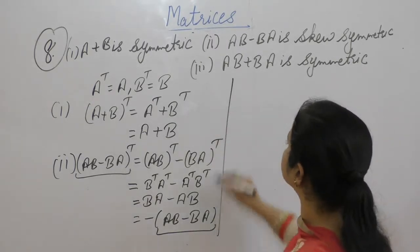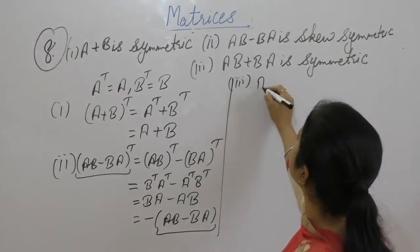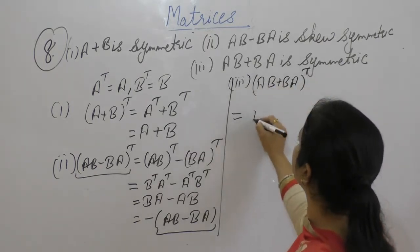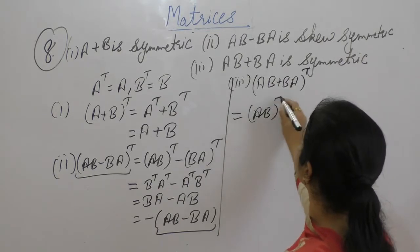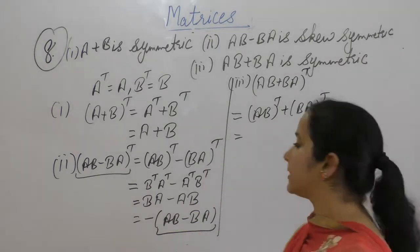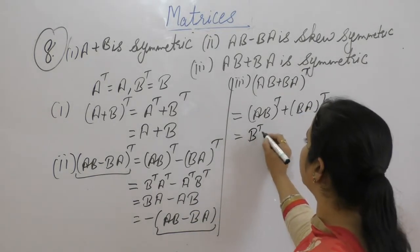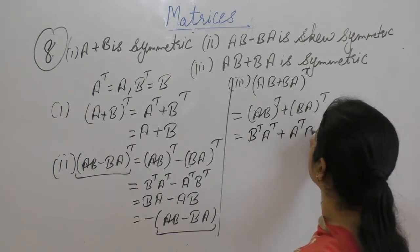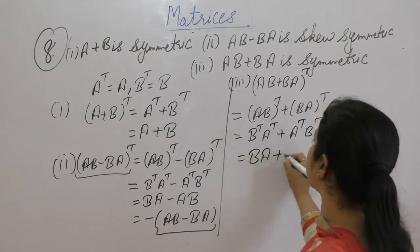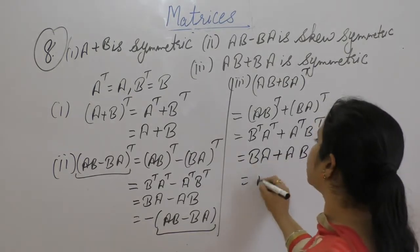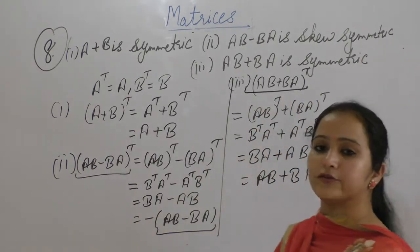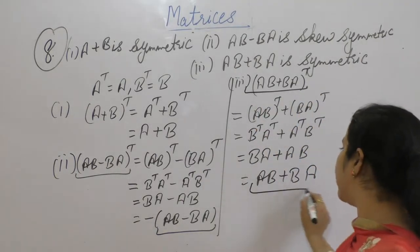Now the third part: AB plus BA is symmetric. Take the transpose. That is equal to (AB) transpose plus (BA) transpose. Using the property of transpose of a product, that equals B transpose A transpose plus A transpose B transpose. Since B transpose is B and A transpose is A, this gives BA plus AB, which is one and the same thing.